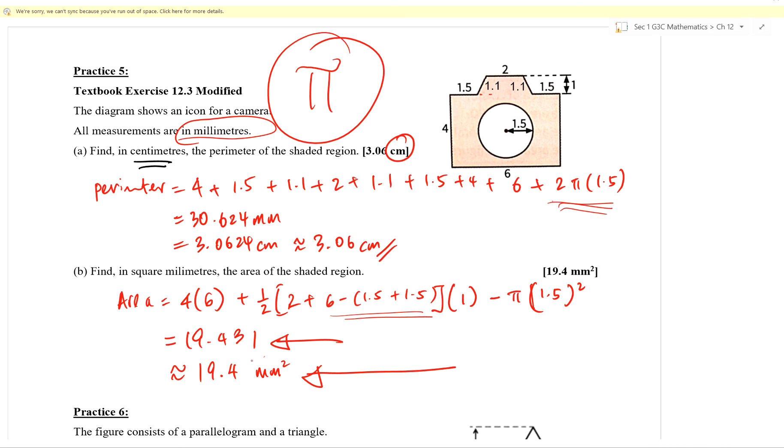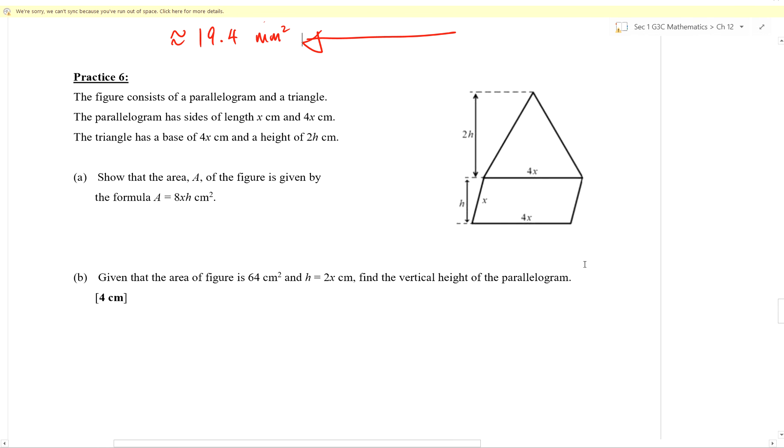If you're really kiasu, you want to be really exact, you will be using your calculator value over here, 19.431 and so on. But we don't need you to go through all that trouble. Here we have practice six, parallelogram and a triangle. Let's take some time to read through this question. Already, then we can start writing down the area. Area.